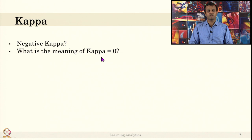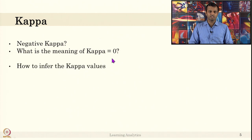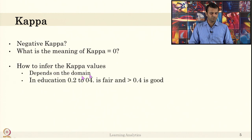What is the meaning of kappa = 0? It means the classifier is performing equal to the chance level. So how do we infer kappa values? In the last slide we mentioned kappa equal to 0.4 — is 0.4 good or bad? There is no definite answer; it depends on the domain.